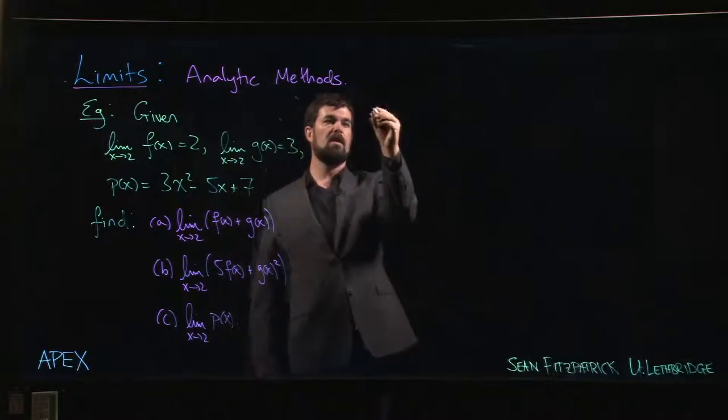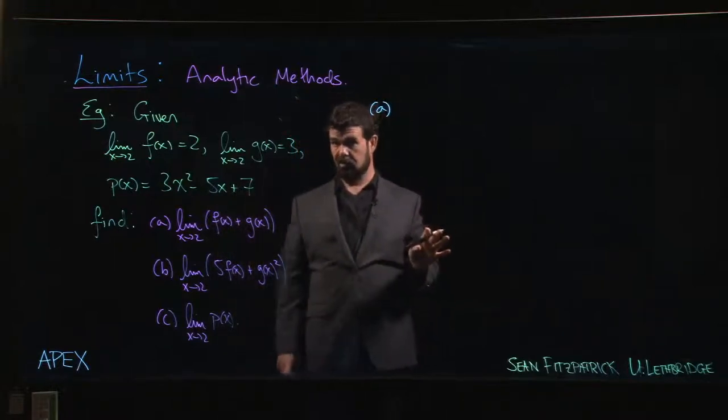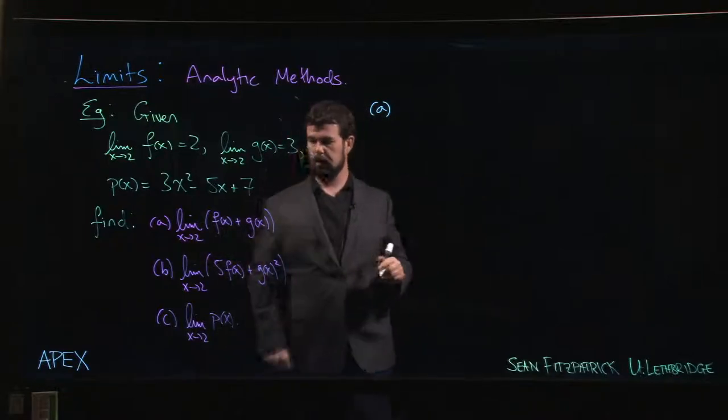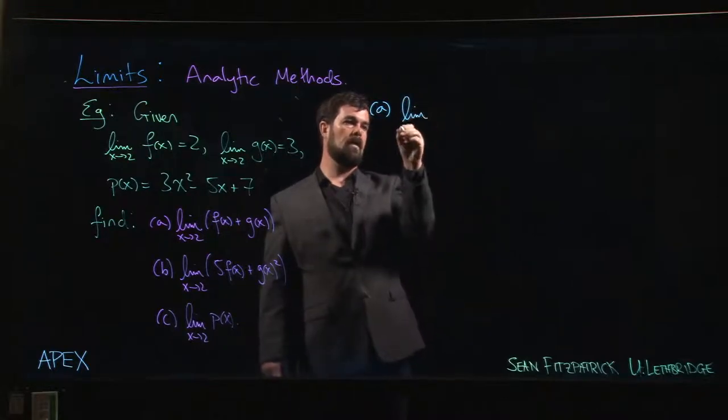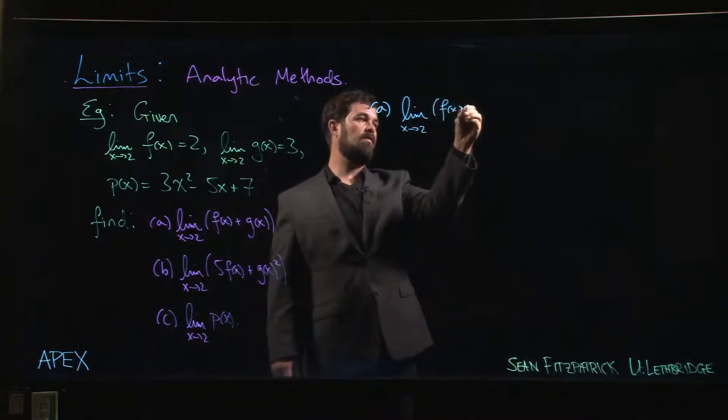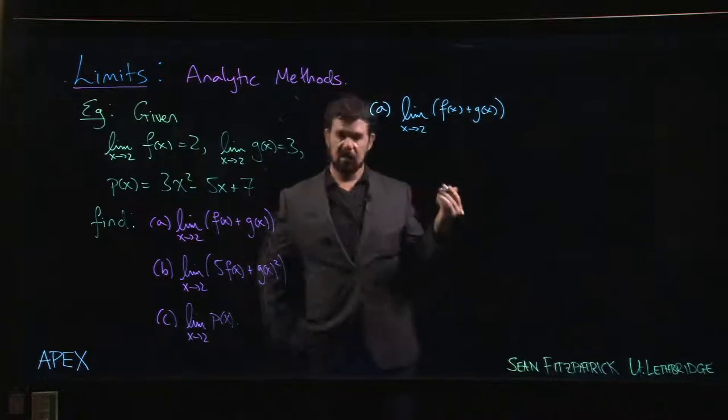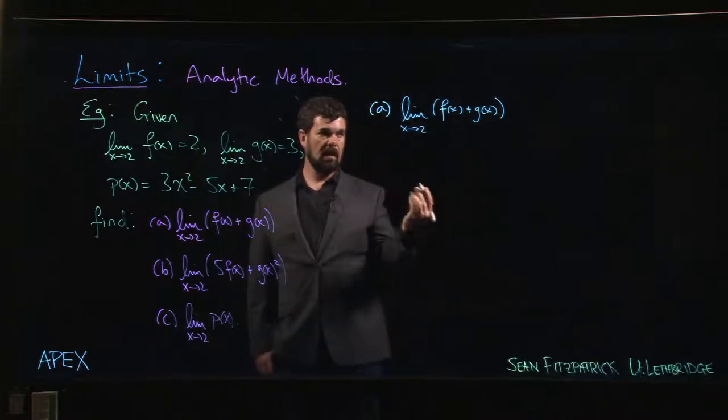The first one is just a straightforward application of the sum rule, which was property D in that limit video. So the limit as x approaches 2 of f(x) plus g(x), well, it's the limit of f plus the limit of g.